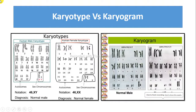Karyogram. Karyotype is the complete set of chromosomes of an individual, whereas karyogram is the visual profile of stained chromosomes in a standard format.